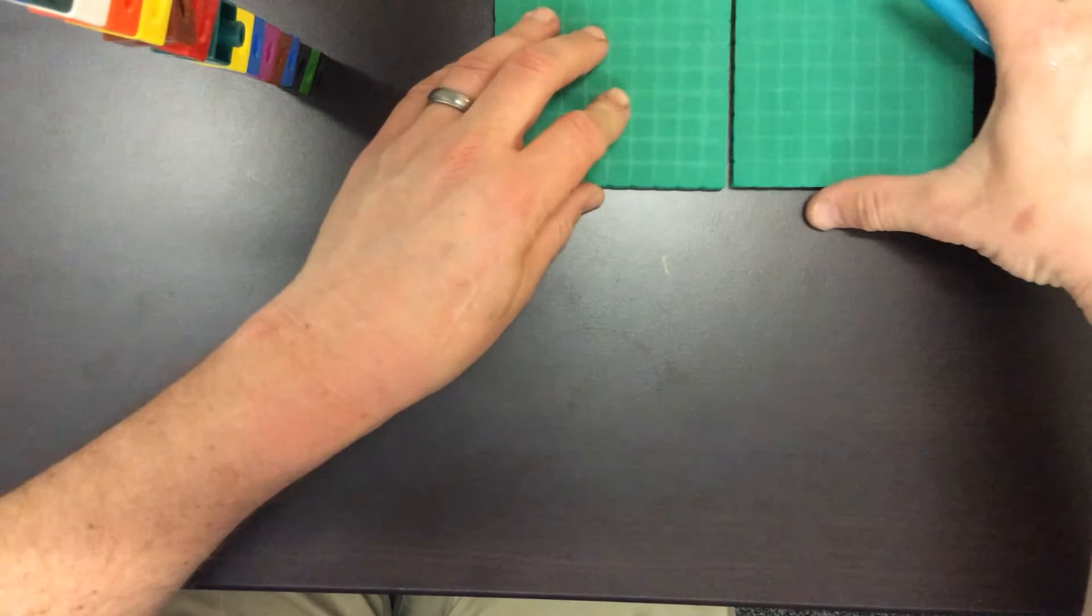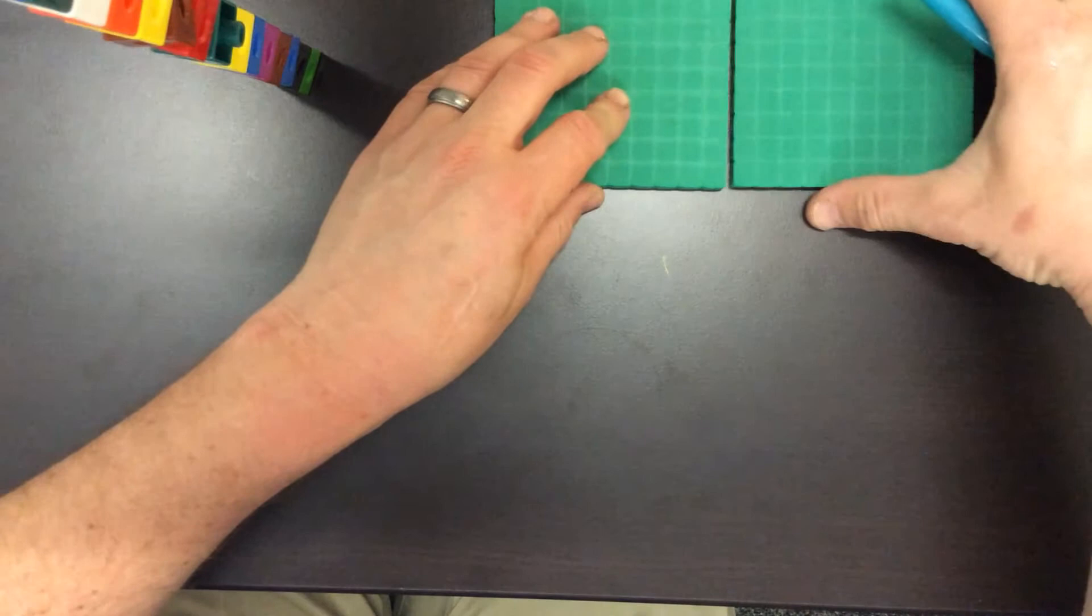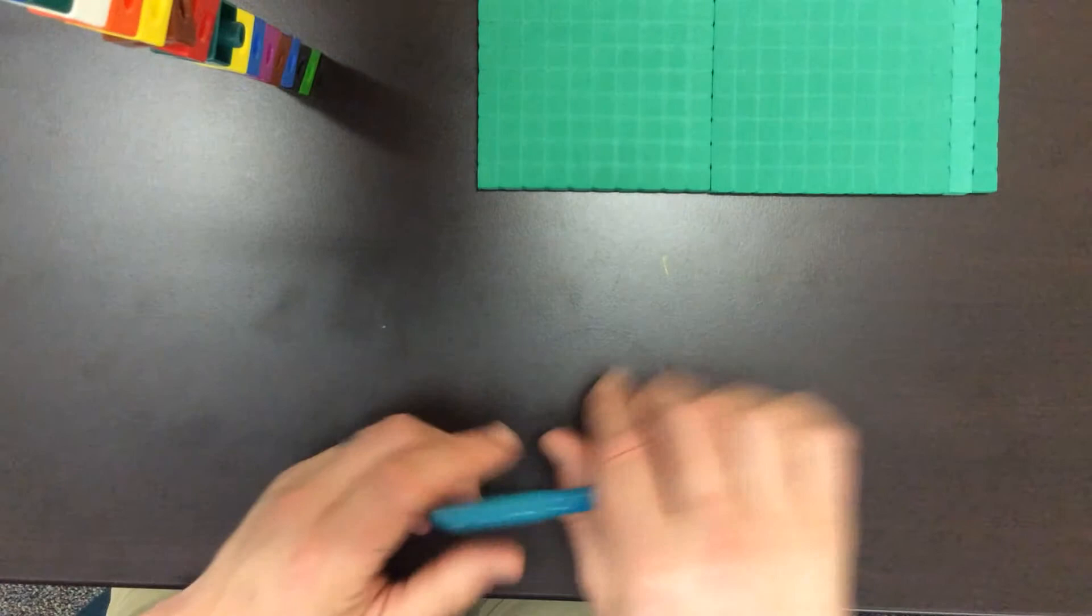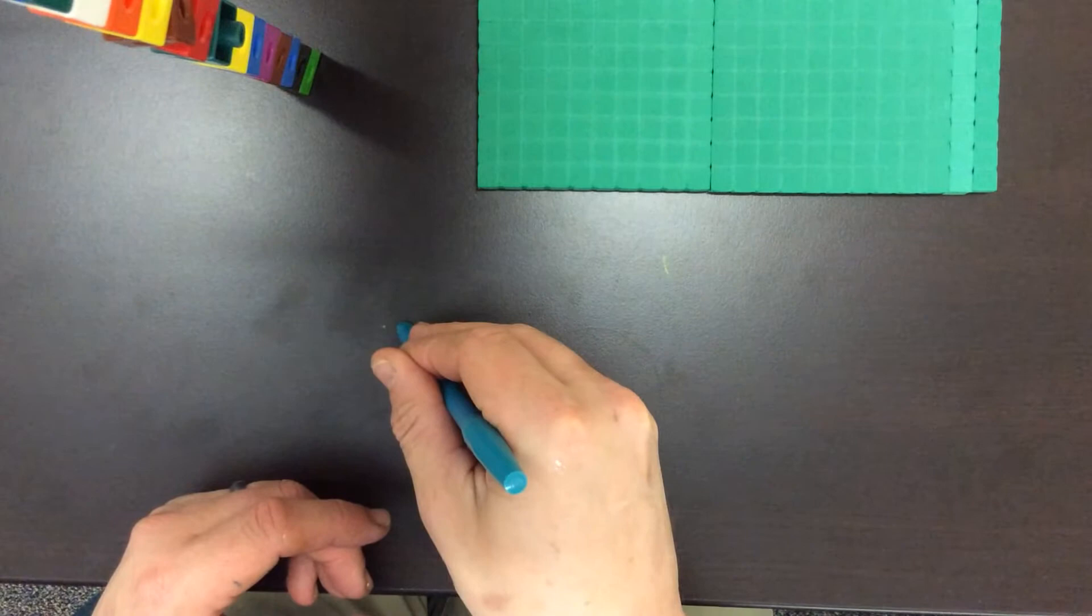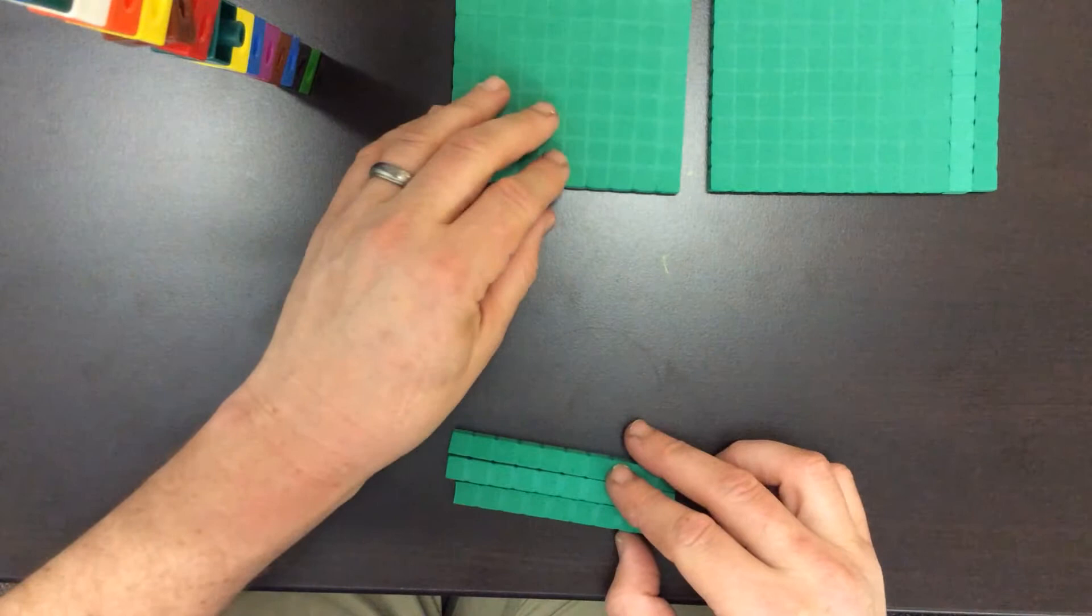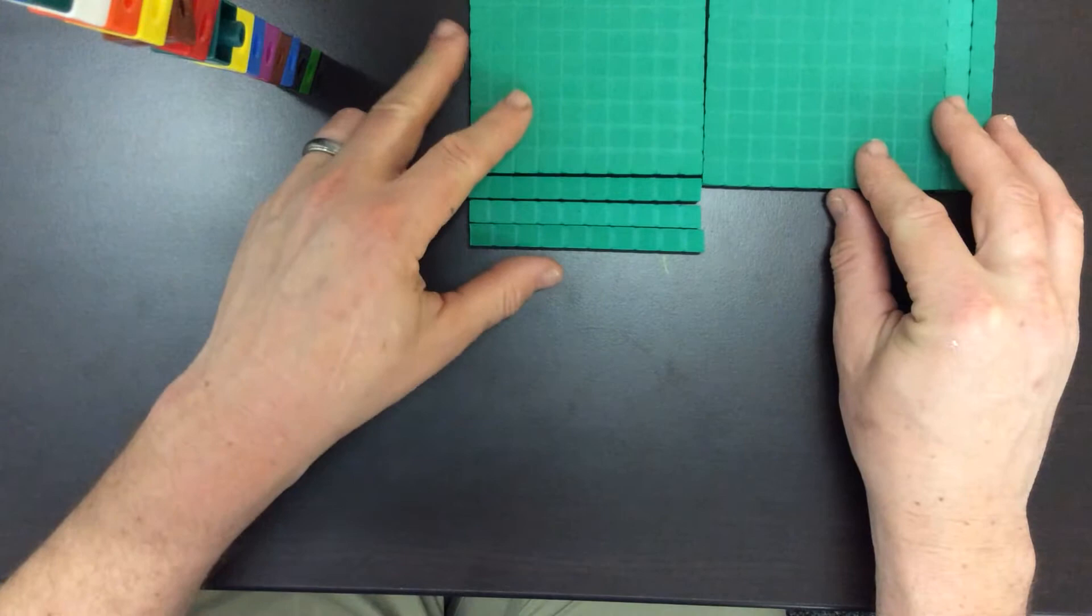So we've got the one whole, we've got the two wholes, and then we've got the two tenths, continuing to build this rectangular array. Now we have our length set up but now we've also got to worry about our width. So if we know that 2.2 is our length we're going to know that 1.3 is our width. So we have one whole going down already, so now we're going to add the three tenths, and we'll continue to add the three tenths to each of those wholes.